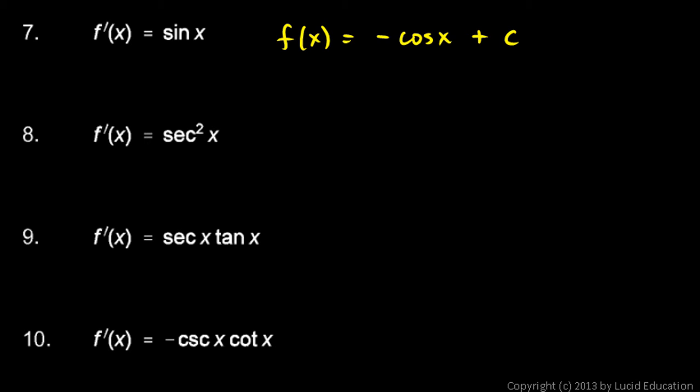Number eight: f prime of x is secant squared. What function f has secant squared x as its derivative? Well, the tangent function. Tangent of x has secant squared x as its derivative, so f of x is tangent of x plus c.